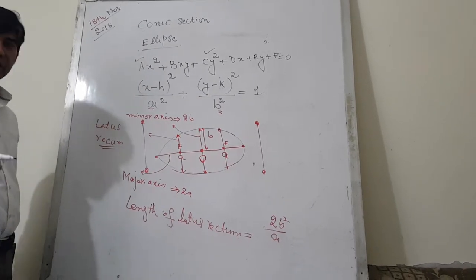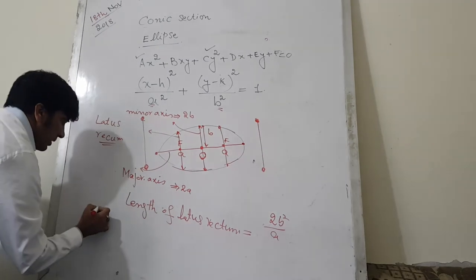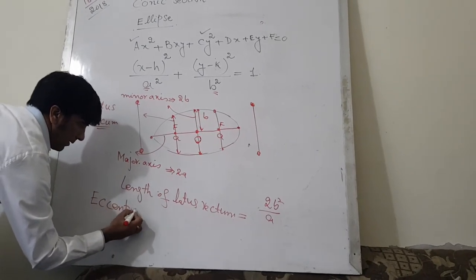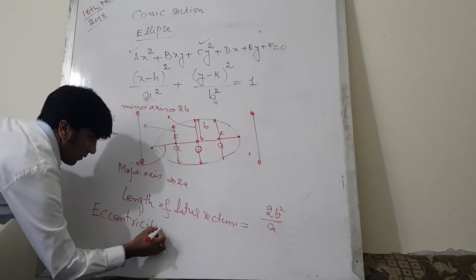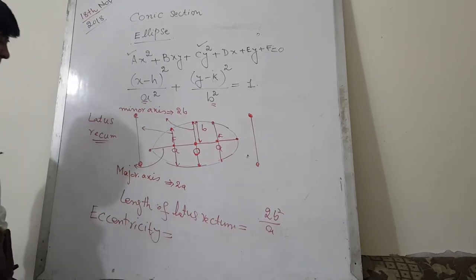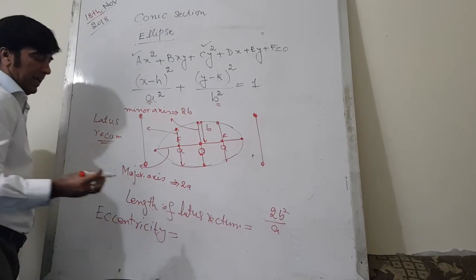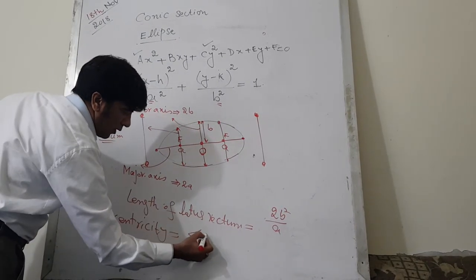Just one more thing about eccentricity. Eccentricity for the ellipse is always less than 1.